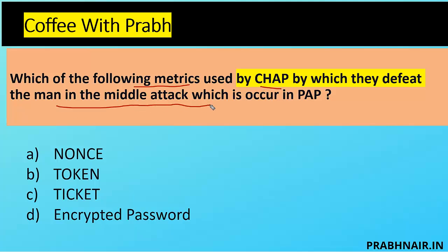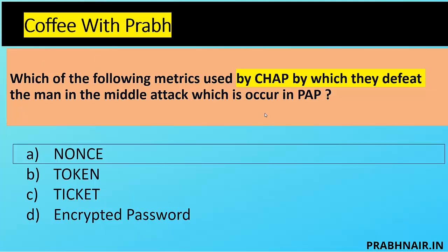Next question: which metric does CHAP use to defeat the man-in-the-middle attack that occurs in PAP? Options include nonce value, token, ticket, and encrypted password. A token is removed; a ticket is removed. Even an encrypted password can be intercepted and patterns found. What CHAP extends is the nonce value — even if systems A, B, and C all have the same password, their outputs sent over the network are different. Answer is A — nonce value.